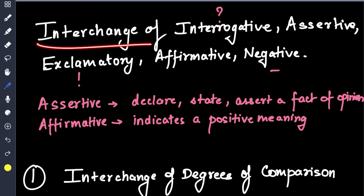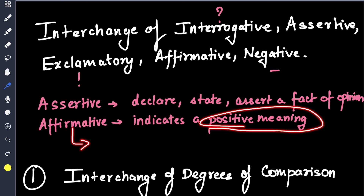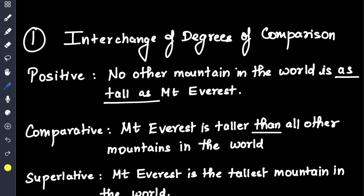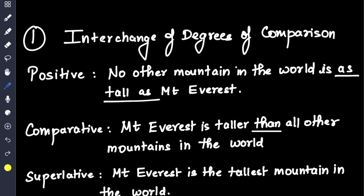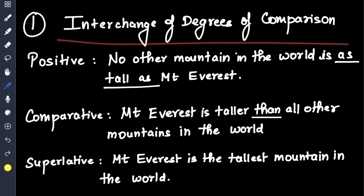The next topic is interchange of interrogative, assertive, exclamatory, affirmative and negative. An assertive sentence means to declare, state or assert a fact or opinion, while affirmative indicates a positive meaning. Opposite to affirmative is a negative sentence where we place 'not' in the sentence. We will be starting with interchange of degrees of comparison. Positive: no other mountain in the world is as tall as Mount Everest. Comparative: Mount Everest is taller than all other mountains in the world. You don't have to change the meaning. Superlative: Mount Everest is the tallest mountain in the world.